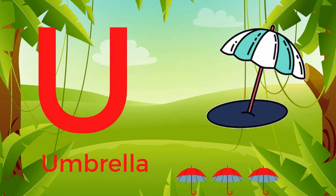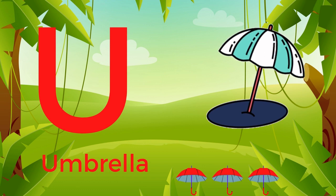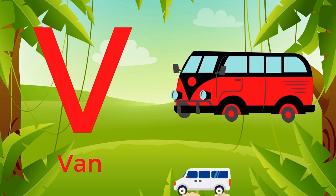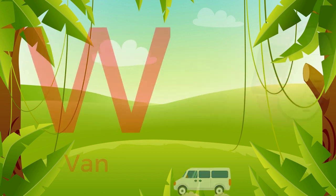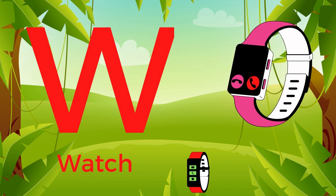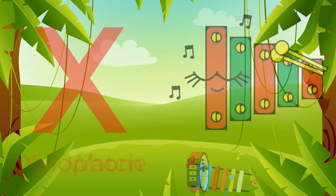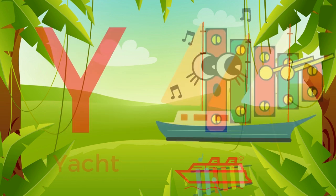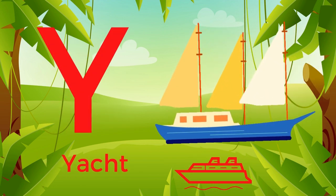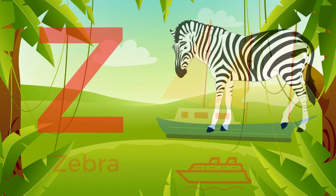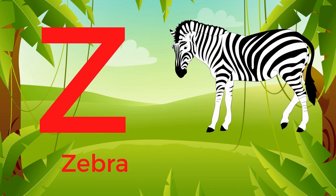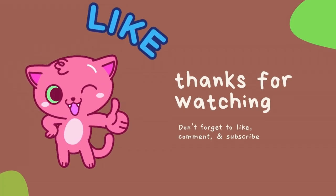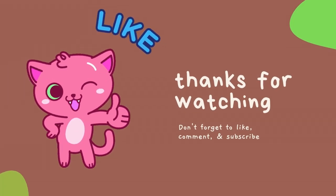U for Umbrella. V for Van. W for Whale. X for Xylophone. Y for Yacht. Z for Zebra. W, X, Y, Z — now I know my ABCs!